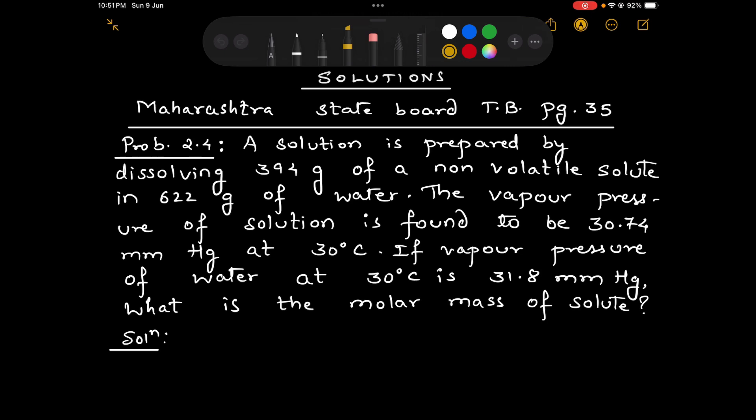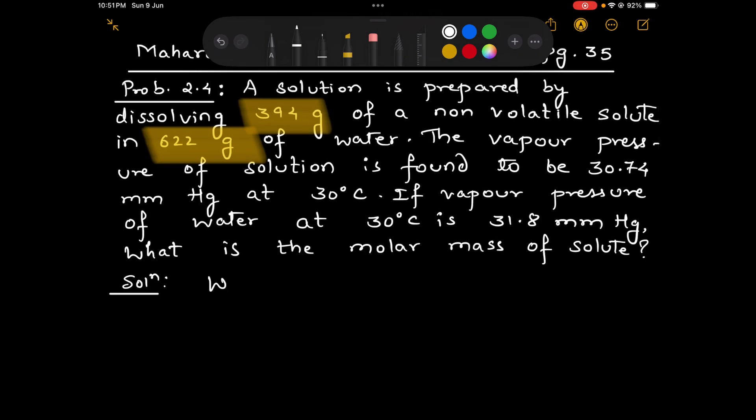Problem 2.4: A solution is prepared by dissolving 394 grams of a non-volatile solute in 622 grams of water. That means W2 mass of solute is given 394 grams and mass of solvent, that is water, is 622 grams.